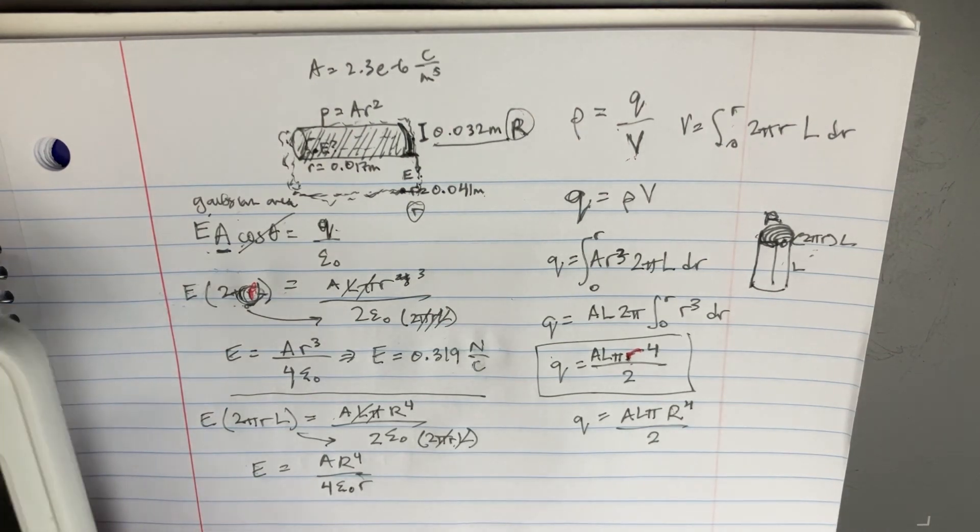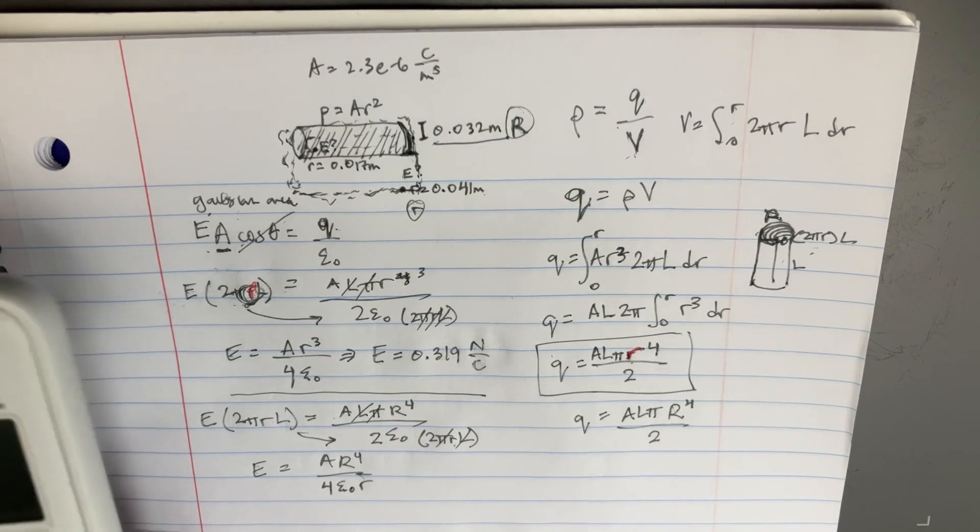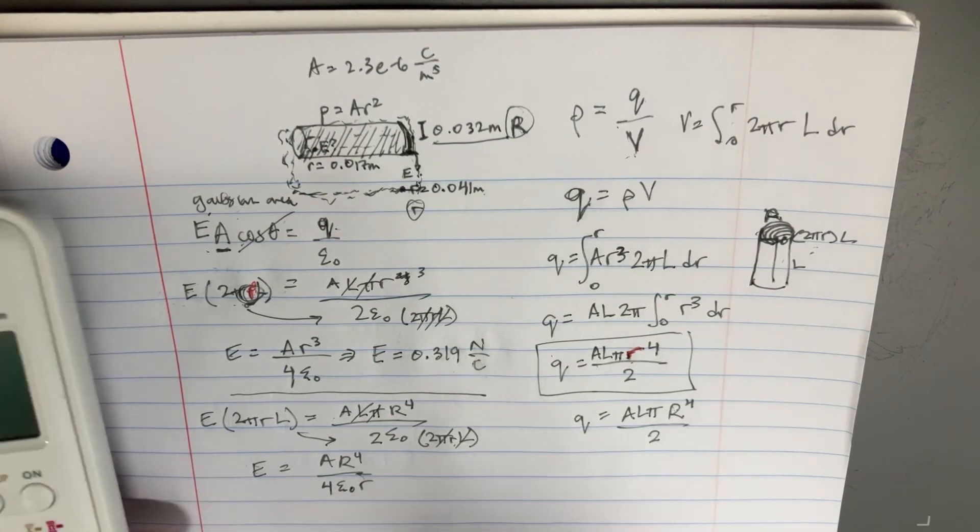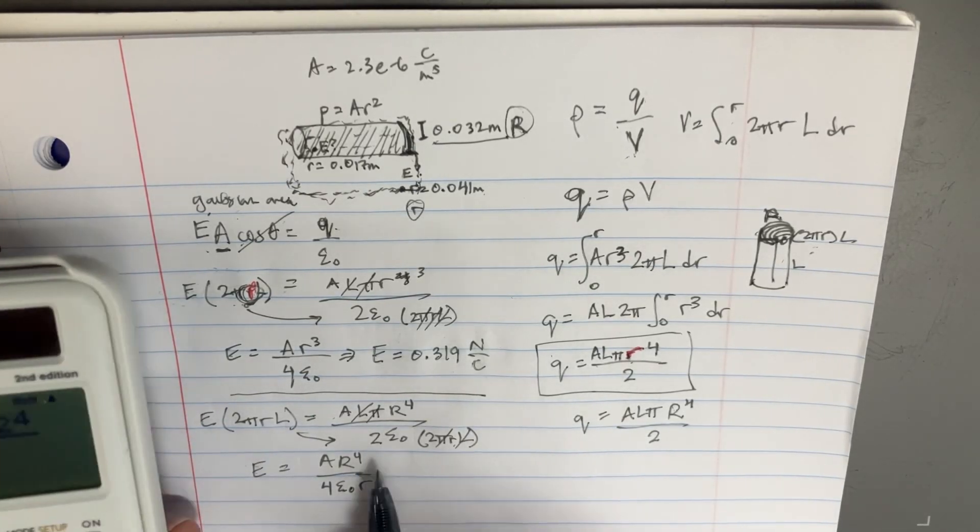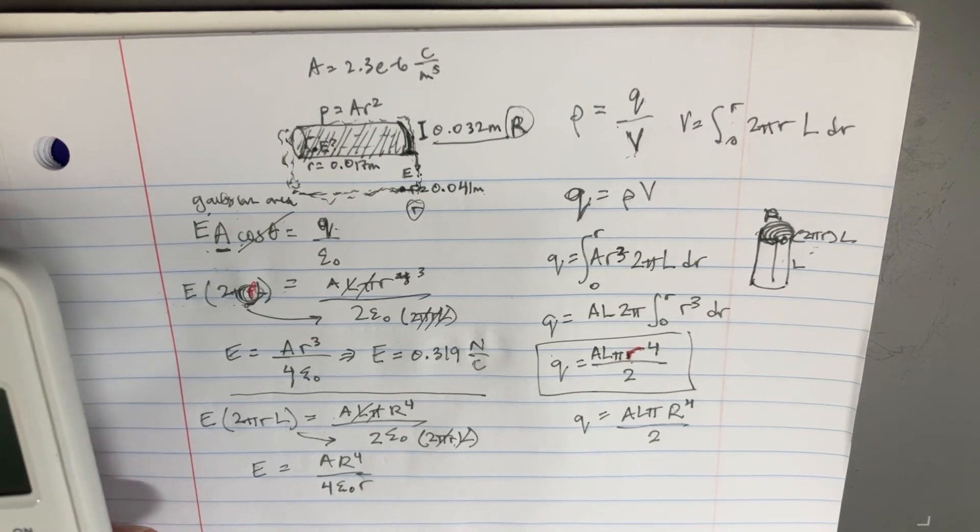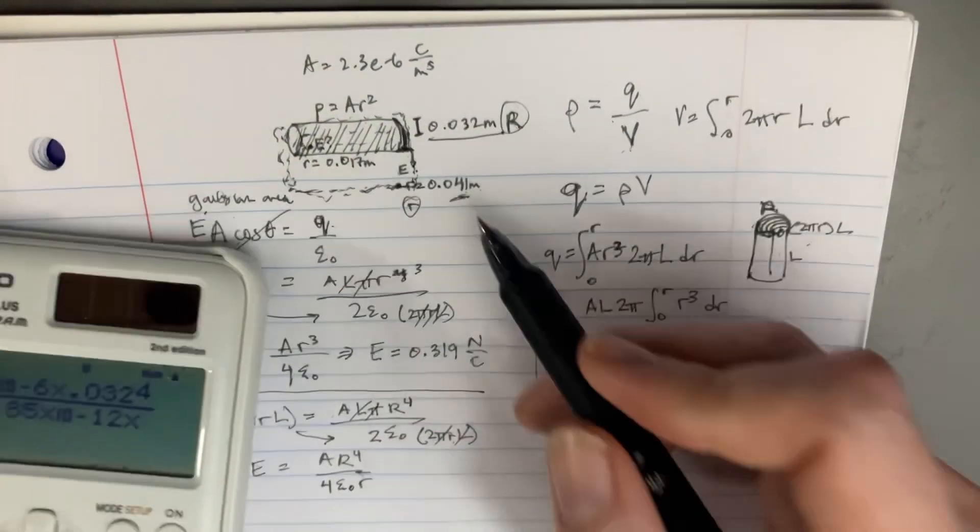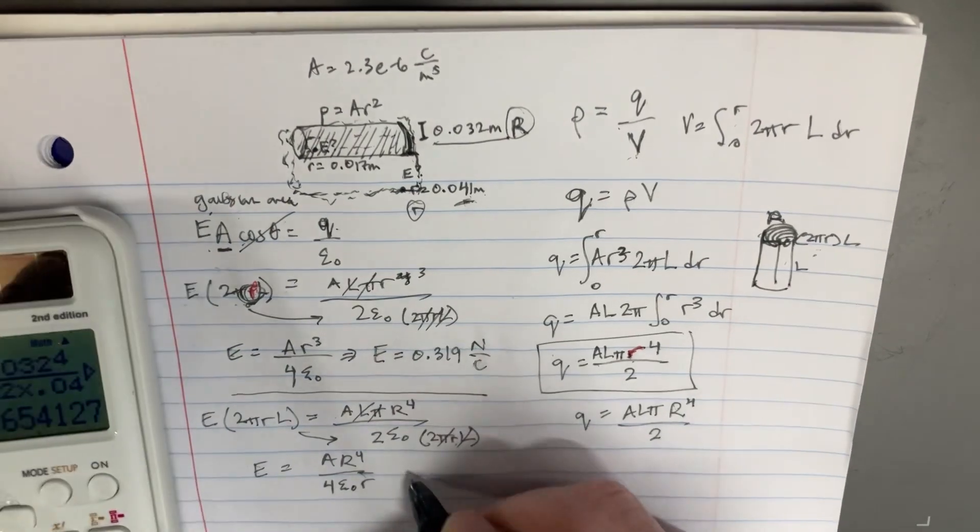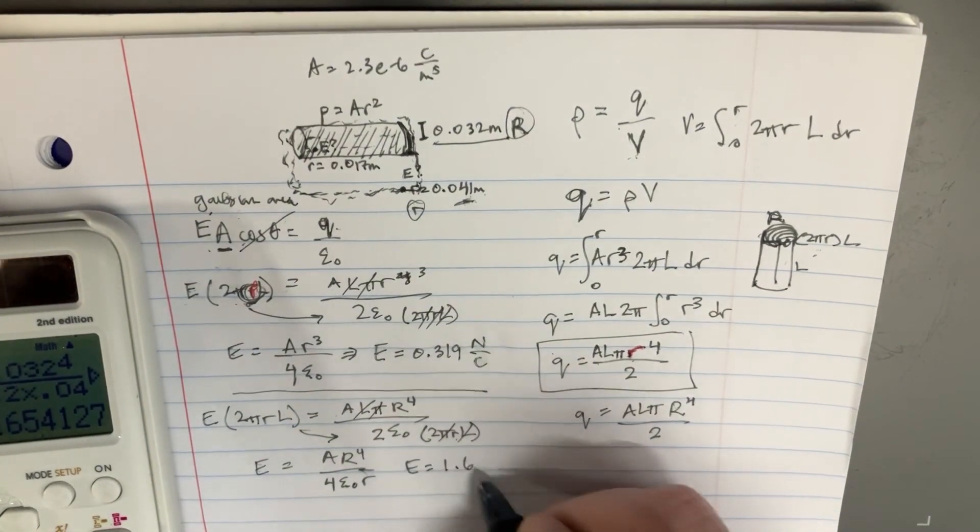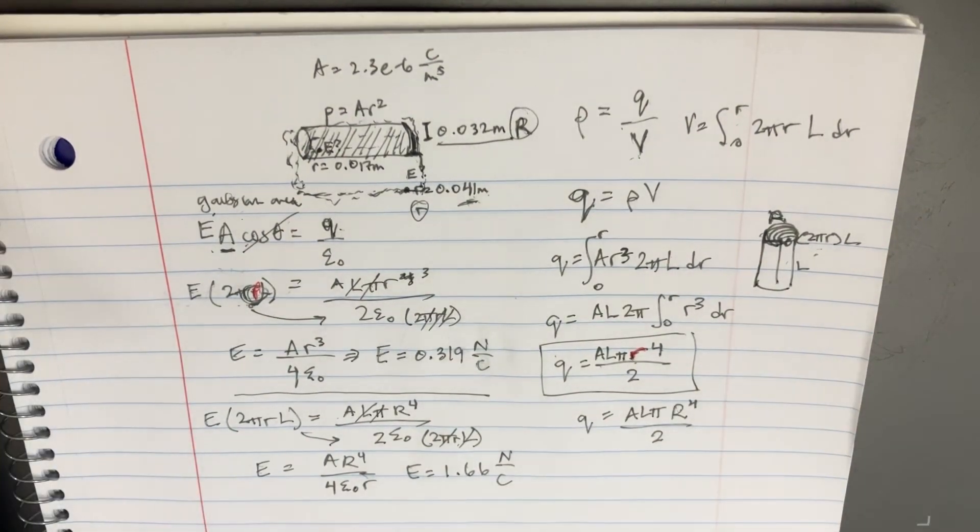So once we plug that into our calculator, we're just going to go 2.3 e to the negative six times the capital R, which is supposed to be this one, 0.032 to the fourth power. And then on the bottom, we have four times epsilon naught, which is 8.85 e to the negative 12, and then times the little r is supposed to be the bigger radius, actually. But yeah, 0.041. Bam. So that would give us our answer of E equals 1.66 Newtons per Coulomb. And that's going to be the radius at that particular point.